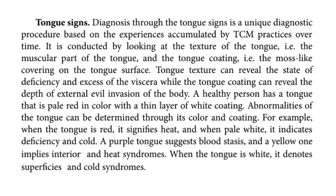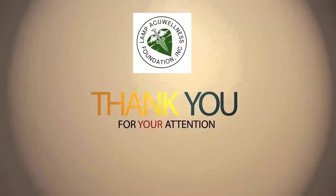Now let's move on to tongue signs. Diagnosis through tongue signs is a unique diagnostic procedure based on the experiences accumulated by TCM practices over time. It is conducted by looking at the texture of the tongue — the muscular parts — and the tongue coating, which is the moss-like covering of the tongue's surface. Tongue texture can reveal the state of deficiency and excess of the viscera, while the tongue coating can reveal the depth of external evil invasion of the body. A healthy person has a tongue that is pale red in color with a thin layer of white coating. Abnormalities of the tongue can be determined through its color and coating. When the tongue is red it signifies heat, and when pale white it indicates deficiency and cold. A purple tongue suggests blood stasis, and a yellow one implies interior heat syndromes. When the tongue coating is white, it denotes superficial cold syndromes.